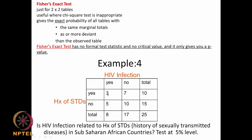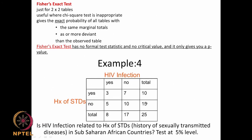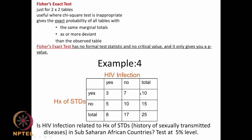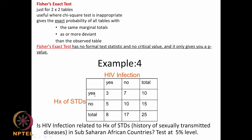We look at this as a hypergeometric distribution, computing factorials for each possible table configuration. The probability of the table (3, 7, 5, 10) is: 10!·15!·8!·17! / (25!·3!·7!·5!·10!) = 0.3332. We can also consider tables with 2, 8, 6, 9 — where if the first cell is 2, the other cells adjust to maintain row and column sums.